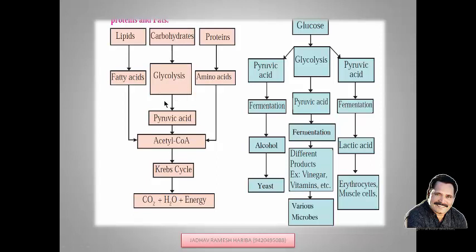If there is a lack of carbohydrates in our body, our body starts to consume lipids and proteins also. Lipids get converted into fatty acids, and fatty acids get converted into acetyl coenzyme A, and the next cycle is the same. Proteins get converted into amino acids, and amino acids get converted into acetyl coenzyme A, and the next process is the same as in carbohydrates.